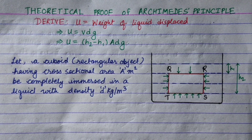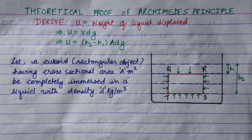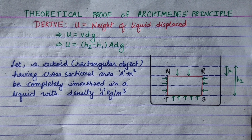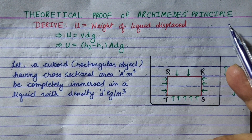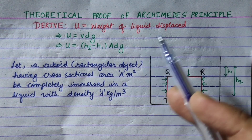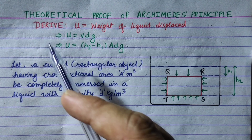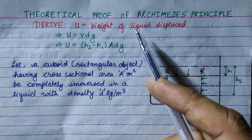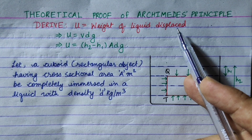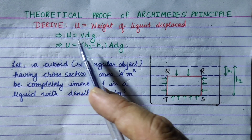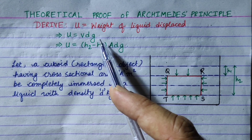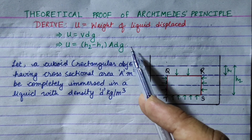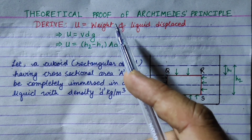Hi everyone. As I am going to Class 10, I am going to discuss the theoretical proof of Archimedes' principle. Two proofs I am going to present: upthrust equals weight of liquid displaced, or upthrust equals bdg, or upthrust equals (s2 - s1)·a·d·g.